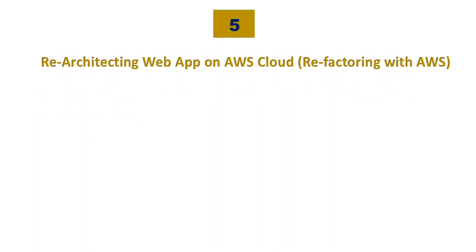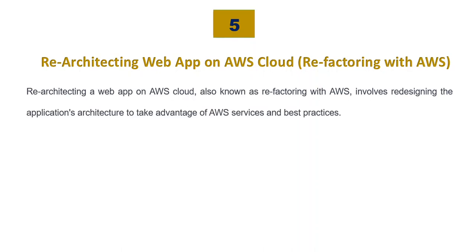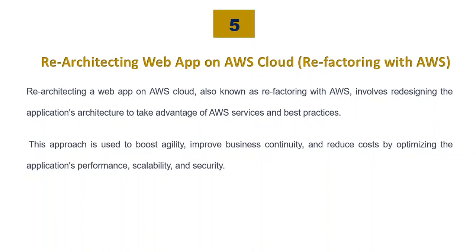The fifth one, which is the last but not the least, is re-architecting a web app on AWS cloud, also known as refactoring with AWS. Re-architecting a web application on AWS cloud involves redesigning the application's architecture to take advantage of AWS services and best practices. This approach is used to boost agility, improve business continuity, and reduce cost by optimizing the application's performance, scalability, and security.